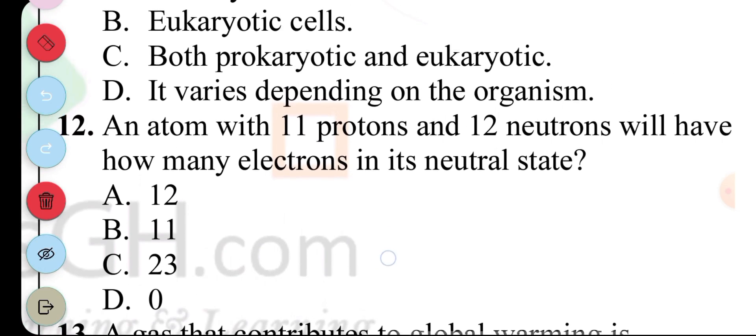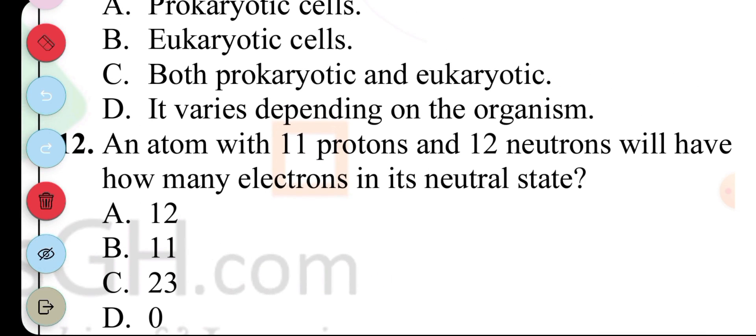Question 12. An atom with 11 protons and 12 neutrons will have how many electrons in its neutral state? An atom which has 11 protons in its neutral state will also have 11 electrons. So the answer is B.